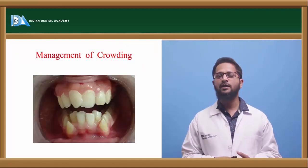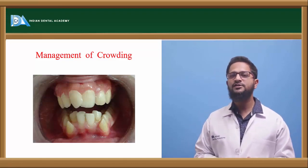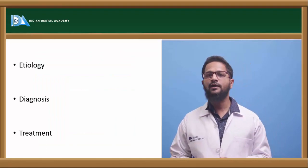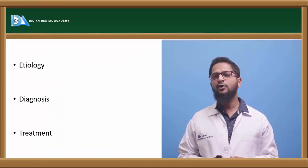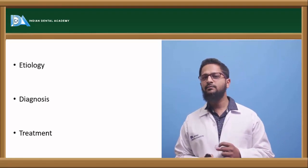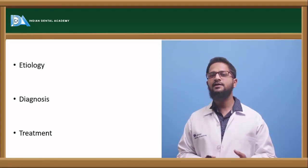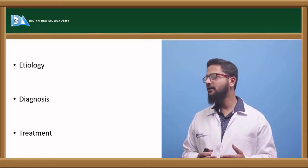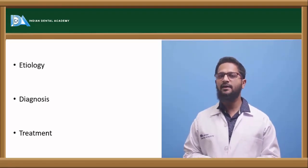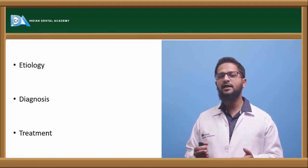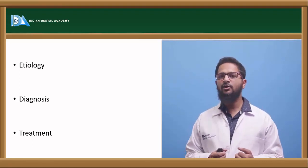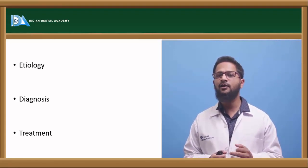Next is management of crowding. Crowding is also a common manifestation of Class I malocclusion. What is the etiology of crowding? Crowding can occur because of arch length-tooth size discrepancy — arch length is less but tooth size is more, resulting in crowding. Apart from this, it also occurs because of habits like thumb sucking, tongue thrusting, and mouth breathing, which result in abnormal movement of teeth.